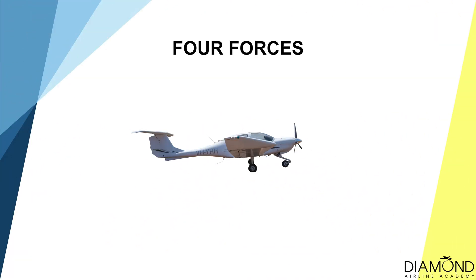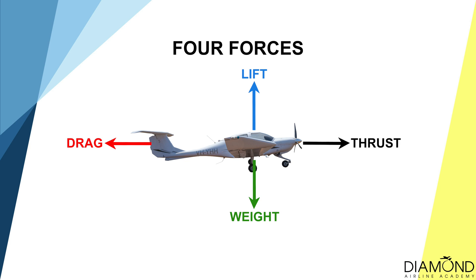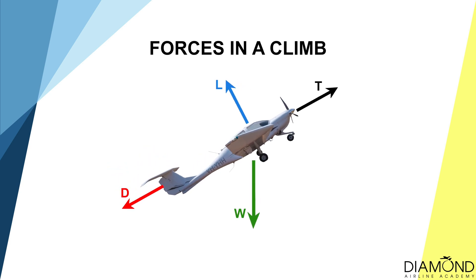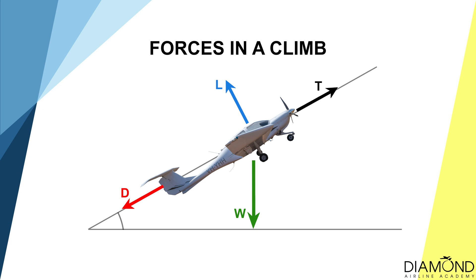The first one is weight. The force that is acting against weight is the lifting force generated by the wing. The third force is drag — when the aircraft is travelling forward through the air, it experiences air resistance, or drag. And to counter that, we have the force generated by our engine, thrust. However, when an aircraft is in a climb, the angle of the wing changes, and the direction of lift — instead of pointing vertically up — will now be tilting back. Under this condition, lift will be less than weight.